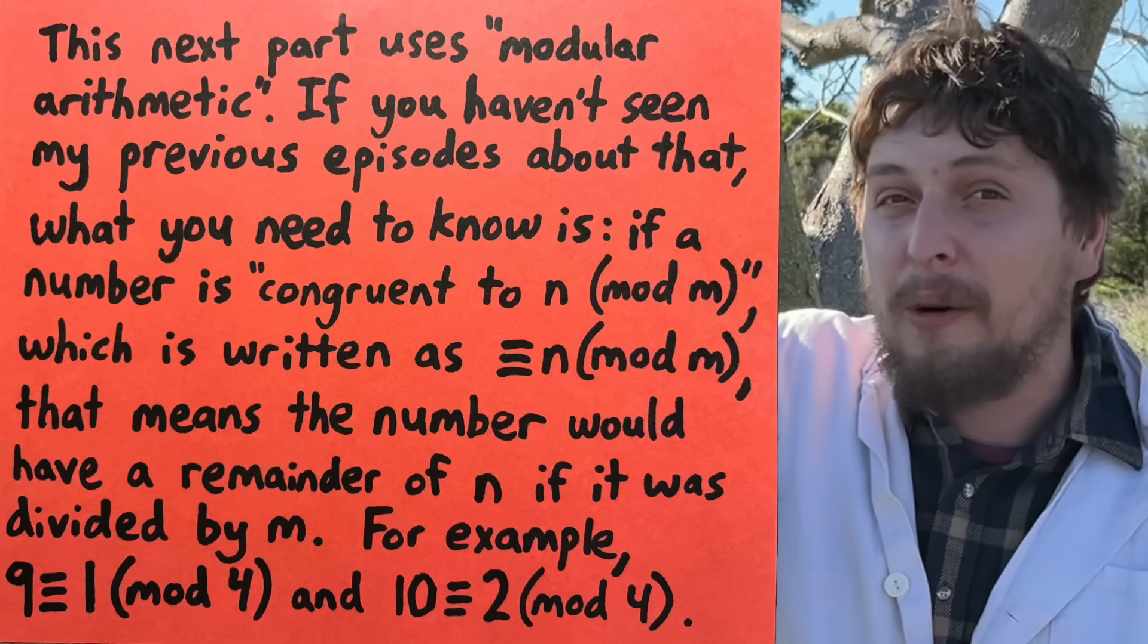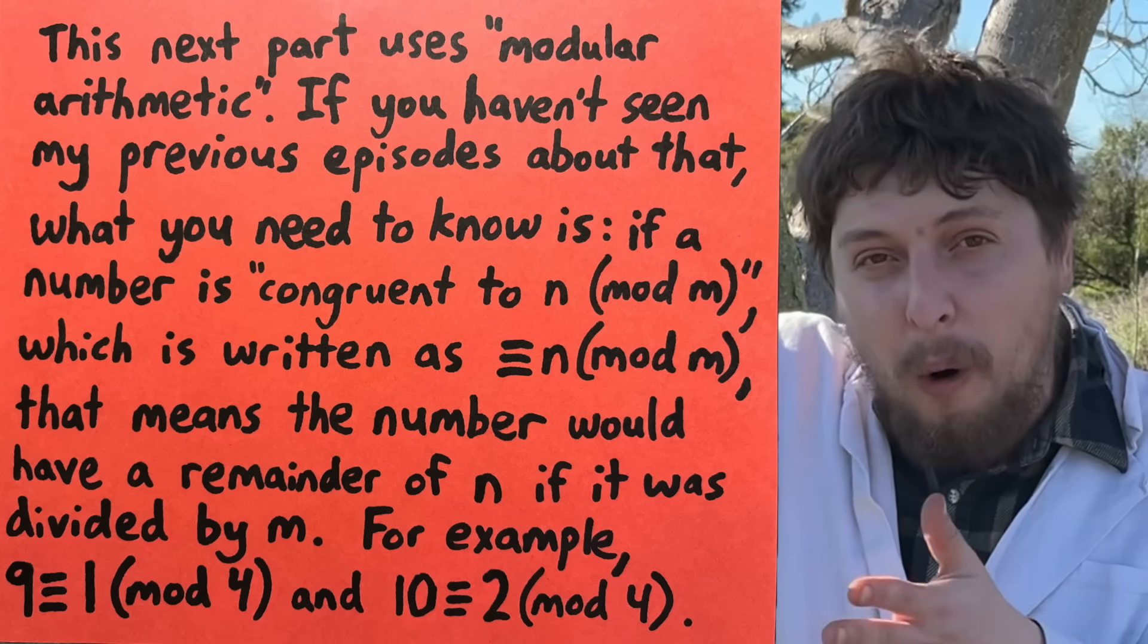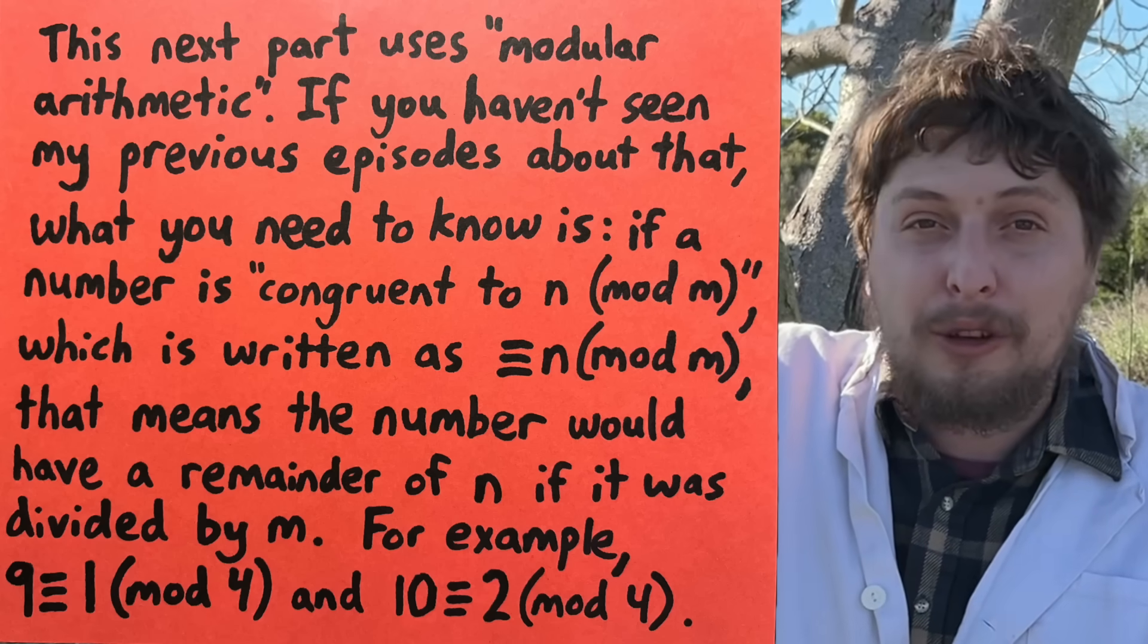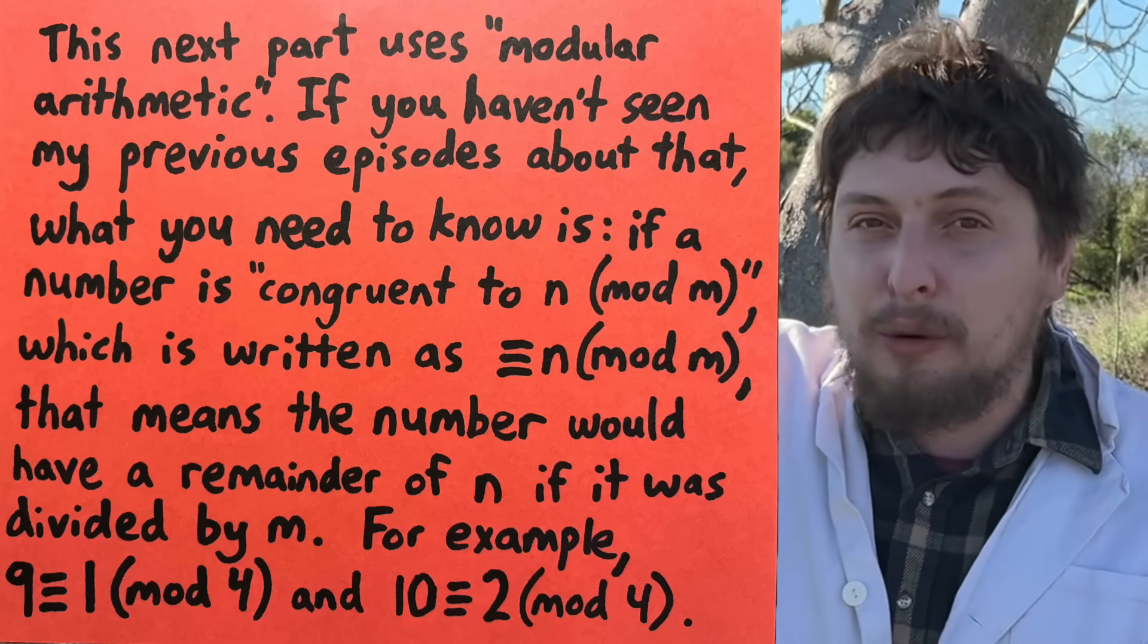Now, to see an interesting pattern about numbers that can be expressed as the sum of two squares, we're going to have to look at what remainder numbers would have if we divided them by four, which is known as being in mod four and seeing what value a number is congruent to.